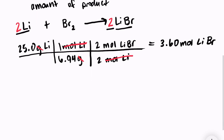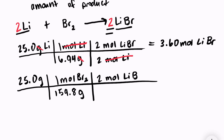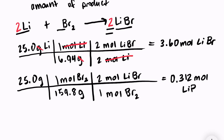Now let's see how much lithium bromide bromine would produce. Starting with 25.0 grams of bromine — which is diatomic, so I use the mass of two bromine atoms: 79.9 × 2 = 159.8 g/mol. The molar ratio gives 2 moles of LiBr over 1 mole of Br₂. So 25 ÷ 159.8 × 2 = 0.312 moles of lithium bromide produced.